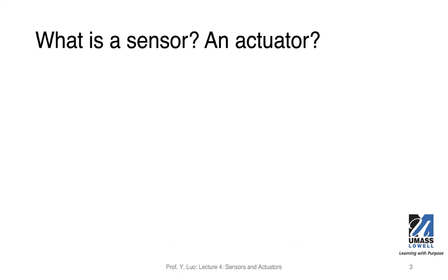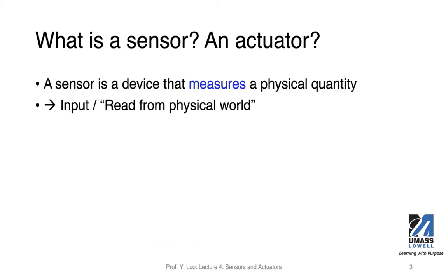Today we're going to look at what is a sensor and what is an actuator. A sensor is a device that measures a physical quantity. When we have this cyber-physical system, it interacts with the physical world. There are a lot of physical attributes that we want to understand — sound level, temperature, speed. You can think of the sensor as an input; we want to have data that we can read from the physical world into this cyberspace.